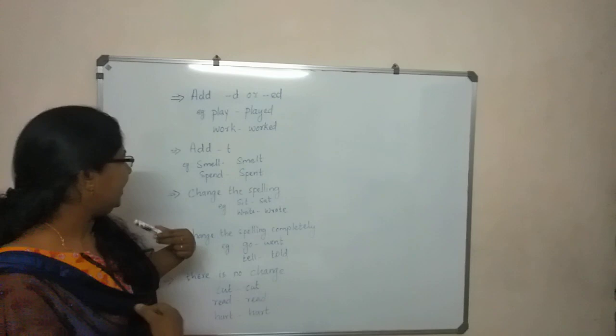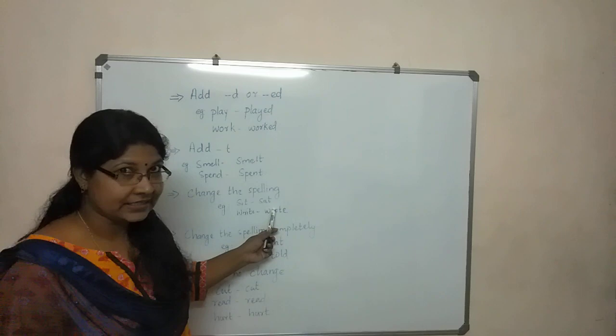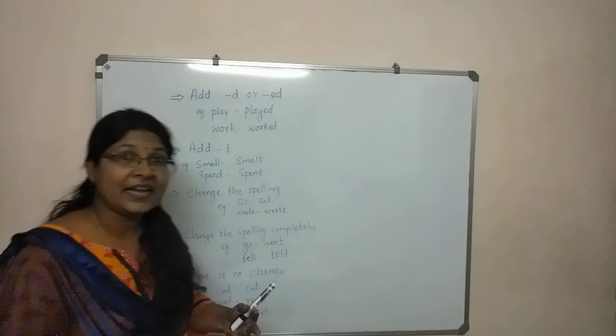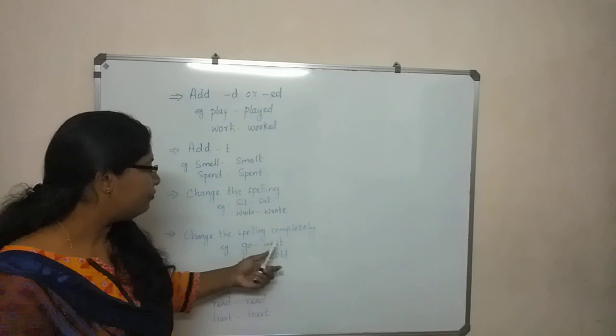For some verbs, the vowel changes — for example, 'sit' becomes 'sat', and 'write' becomes 'wrote'. In certain verbs, the spelling is completely changed — for example, 'go' becomes 'went', and 'tell' becomes 'told'. That is completely changed.